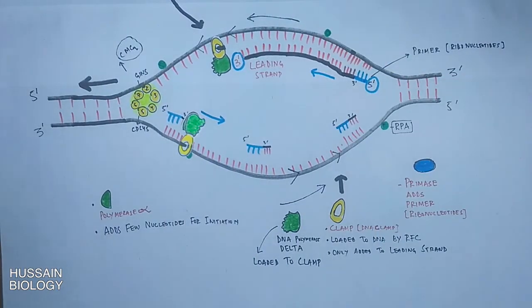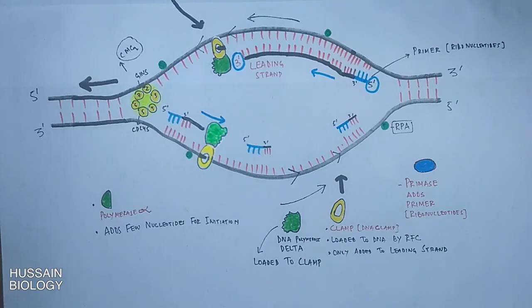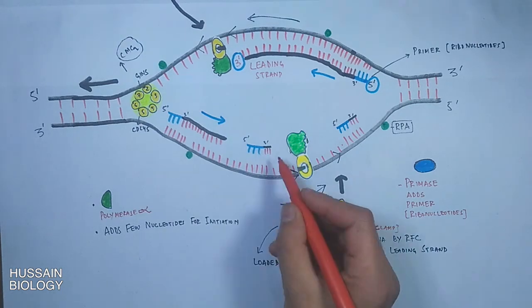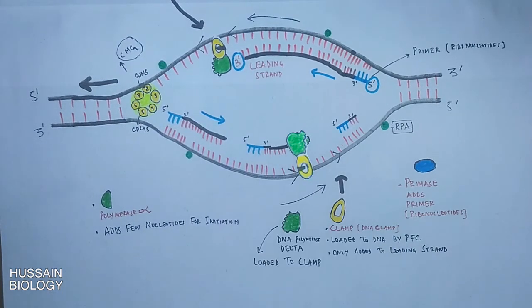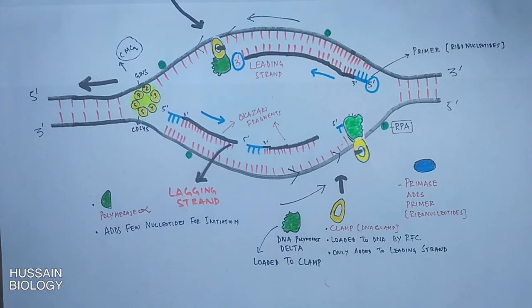Now on the lower strand which has 3 prime to 5 prime orientation, the polymerase has to run away from the helicase enzyme because this is the only way it can add nucleotides on the 3 terminus end. So this way the polymerase delta forms DNA strand in segments called the Okazaki fragments. And this strand is termed as lagging strand.